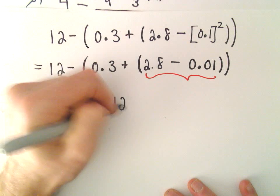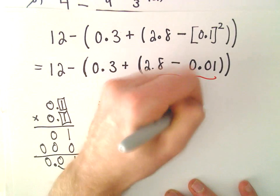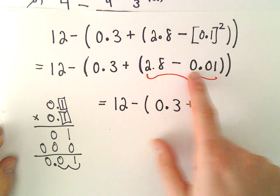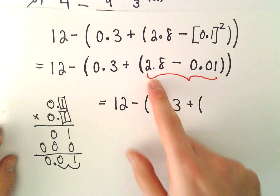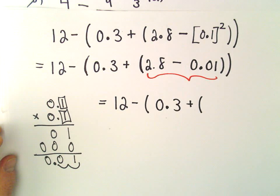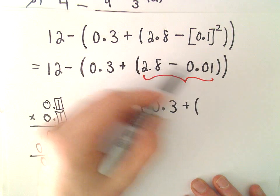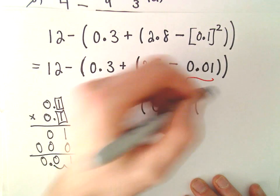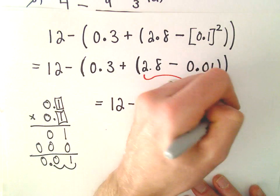So we've got 12 minus 0.3 plus 2.8 minus 0.01. I always think about money for some reason. To me, it makes it sort of more tangible, and I can somehow do it in my head. This is like having $2.80. If somebody takes away 1 cent, you've got $2.79 left over.